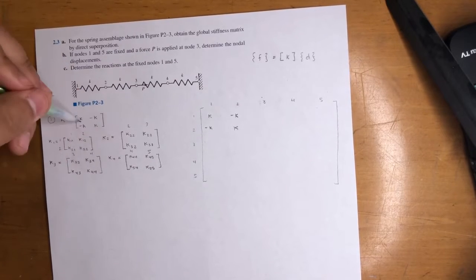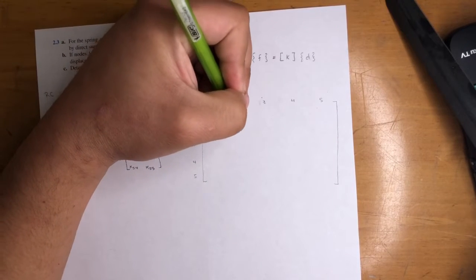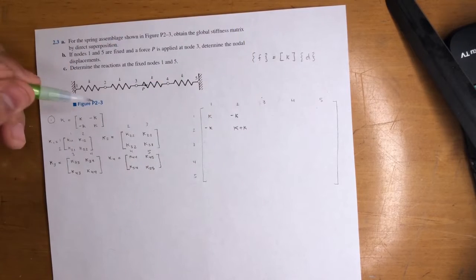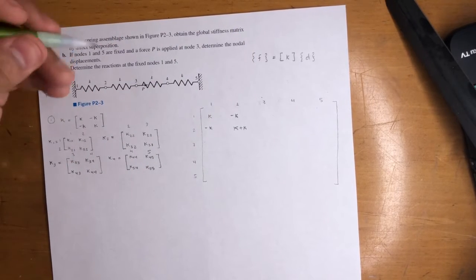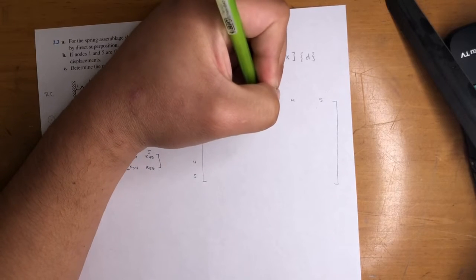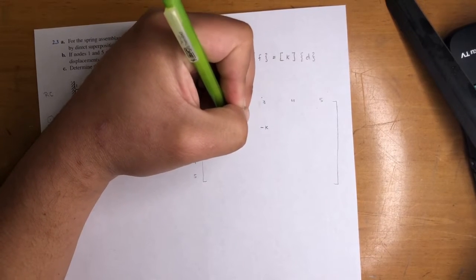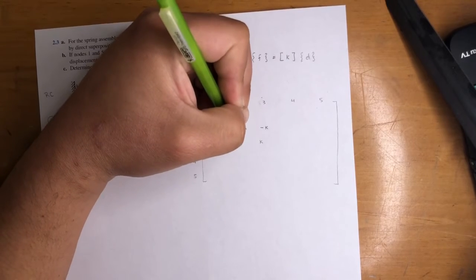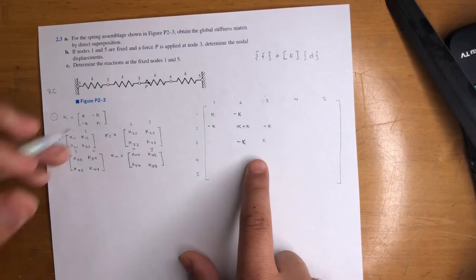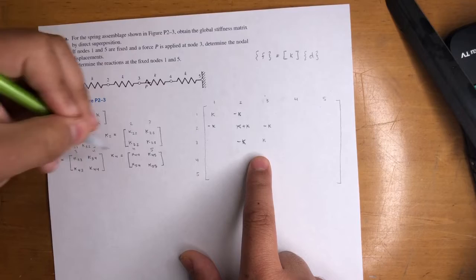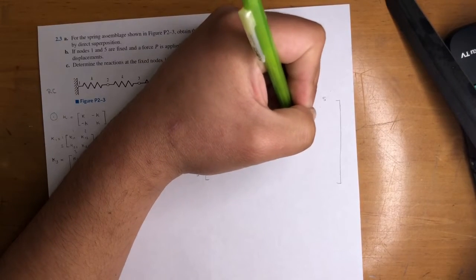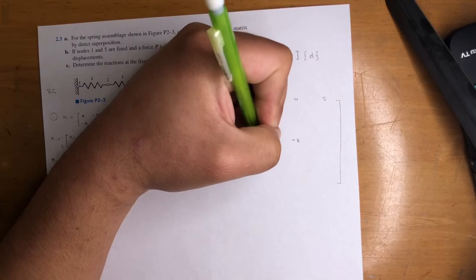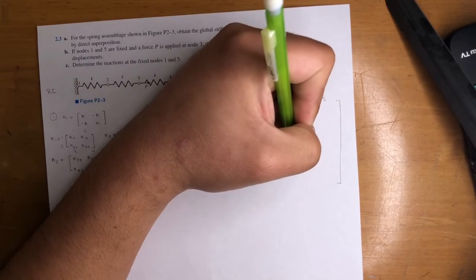That little matrix goes in this little area. For the next one, K22, same thing. So we're going to add a K here, right? Because K22 comes up twice, here and here. The same thing. Negative K, negative K, and K. Okay, then K33 again comes out twice, and there's another K. So K, negative K, negative K, and K.